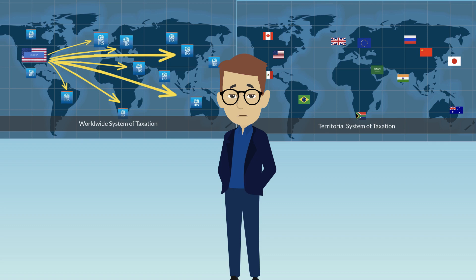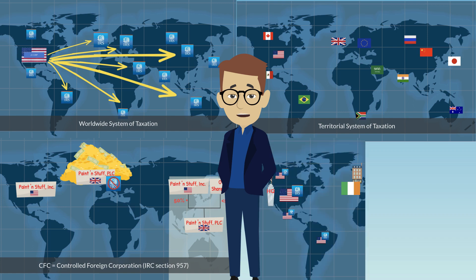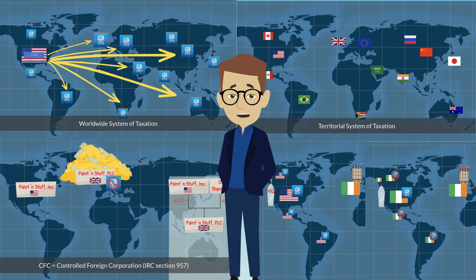In response, some companies structured their global organizations in a way that kept their foreign source income offshore and out of the reach of the IRS for as long as the U.S. parent wanted to. We also discussed how some U.S. companies were going so far as moving their global headquarters to other countries in order to avoid having to pay the U.S.'s higher corporate tax rate on their entire worldwide income.